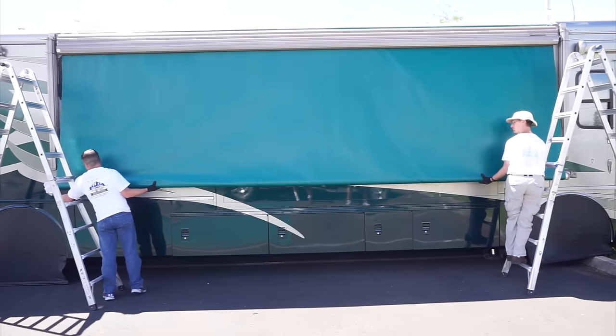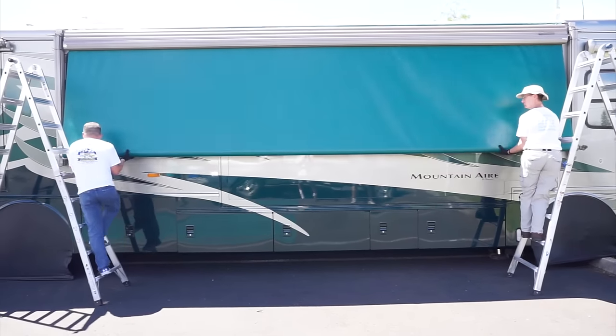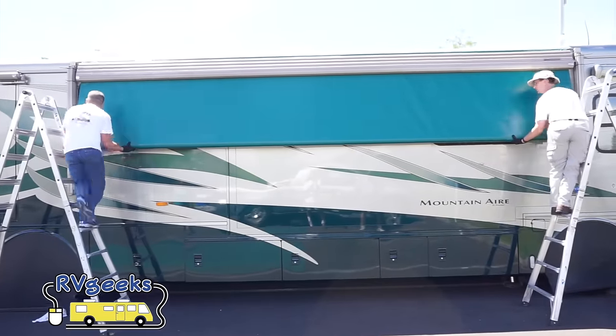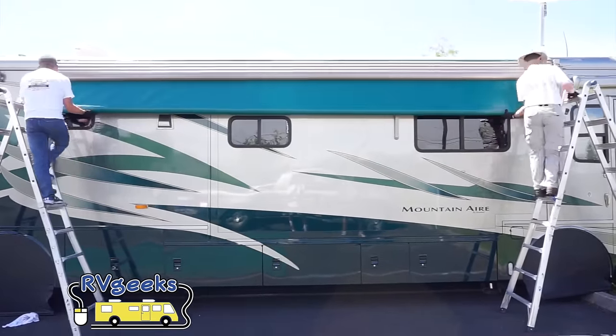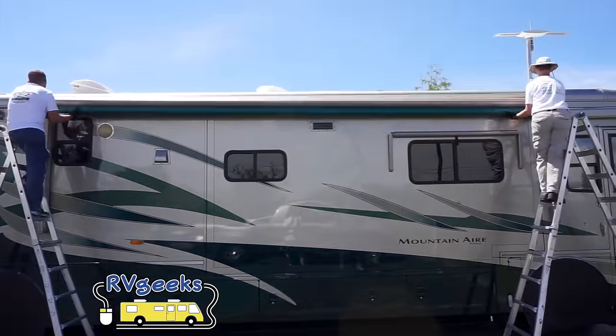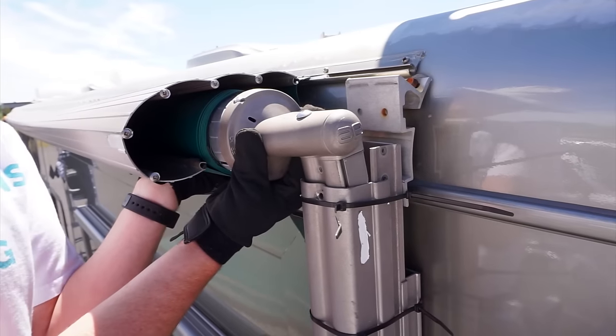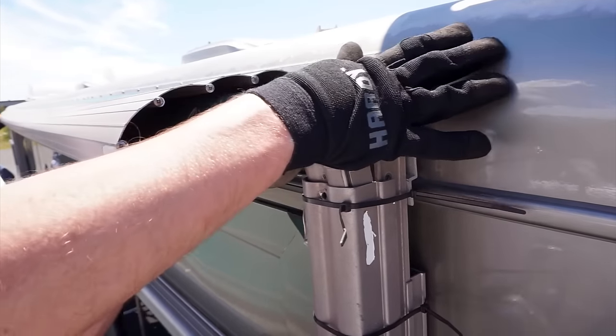With one person at each end, begin rolling the awning up onto the roller tube, climbing the ladders as you go. Place both ends of the tube back into the tops of the arms.